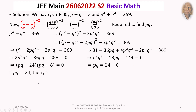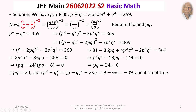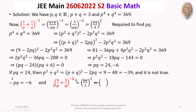If PQ equals 24, then P² plus Q² equals (P plus Q)² minus 2PQ equals 9 minus 48 equals minus 39. But the sum of squares of two real numbers can never be negative, so PQ equals 24 is rejected. Therefore, PQ equals minus 6.